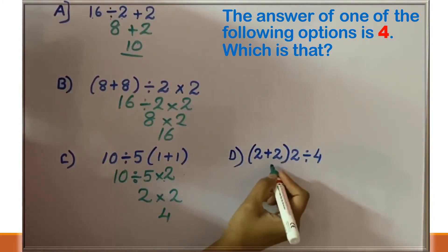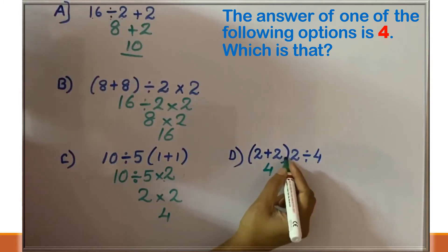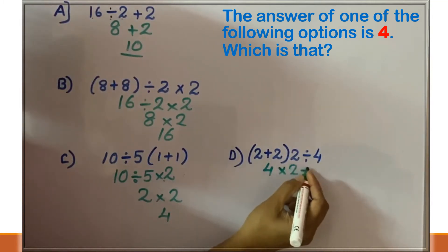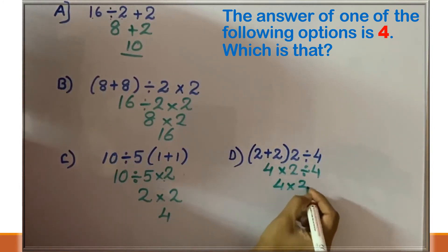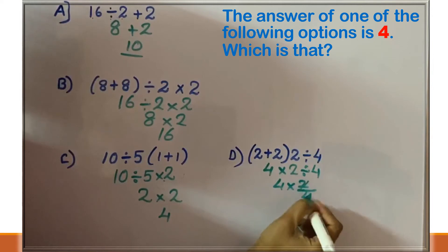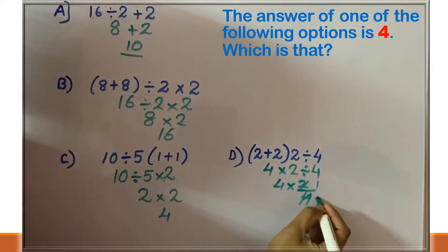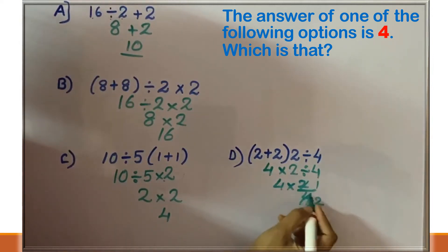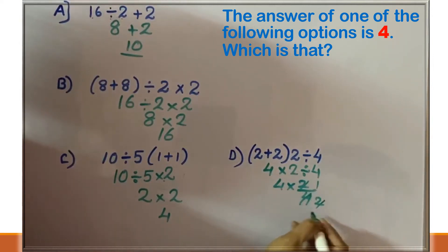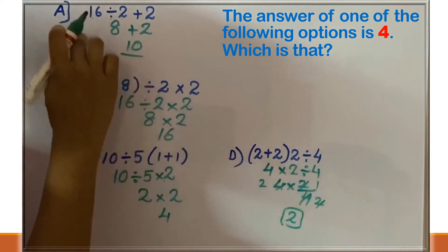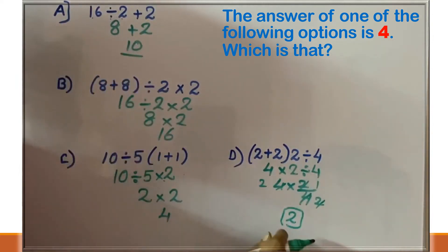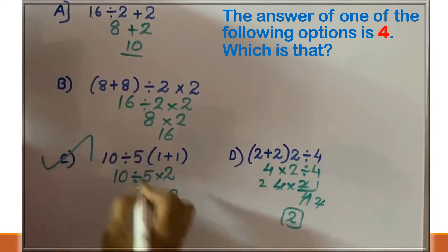Option D: bracket first, so 4. Consider that as multiplication. In multiplication and division, we do division first. So, 4 into 2 divided by 4 means it's 1/2. So, 4 into 1/2 — we can cancel this — the answer is 2. So, out of these 4 options, option C result is 4.